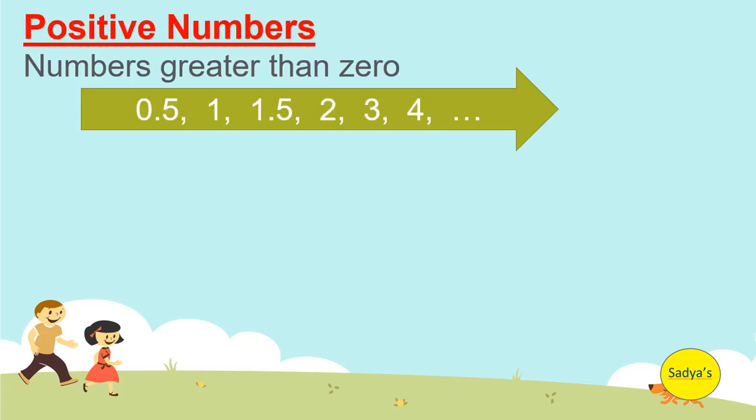So now we can define positive numbers. The numbers greater than zero. For example, 0.5, 1, 1.5, 2, 3, 4 and so on.